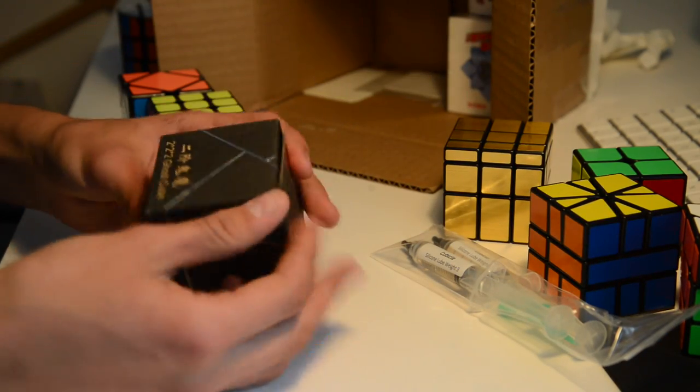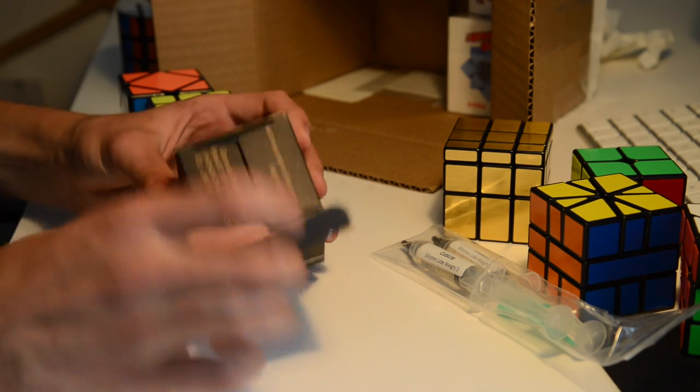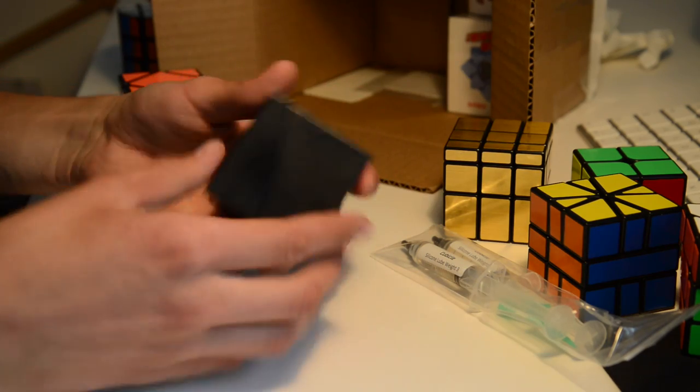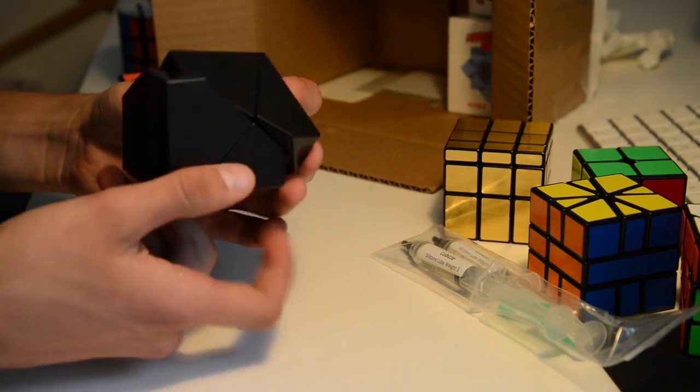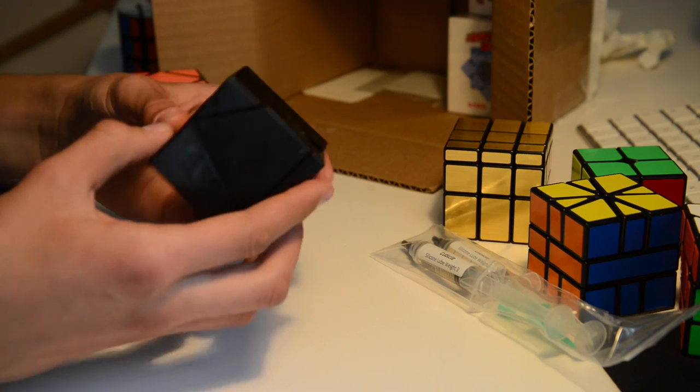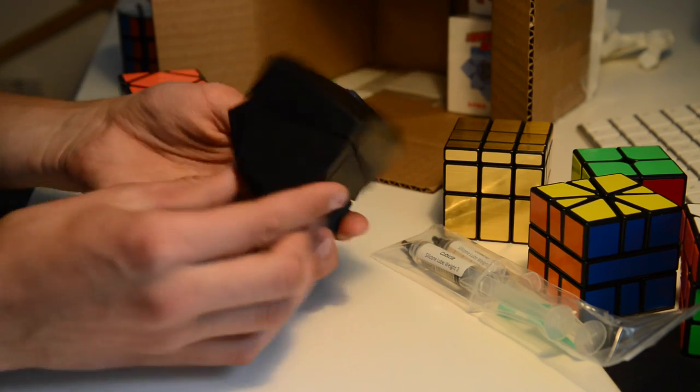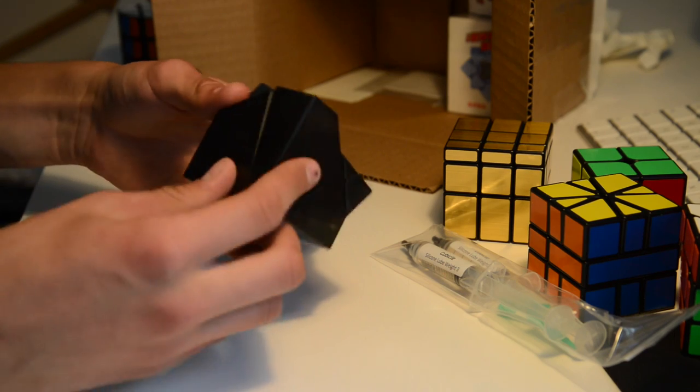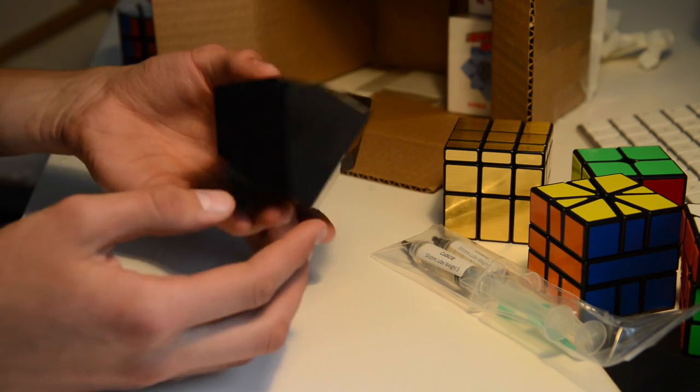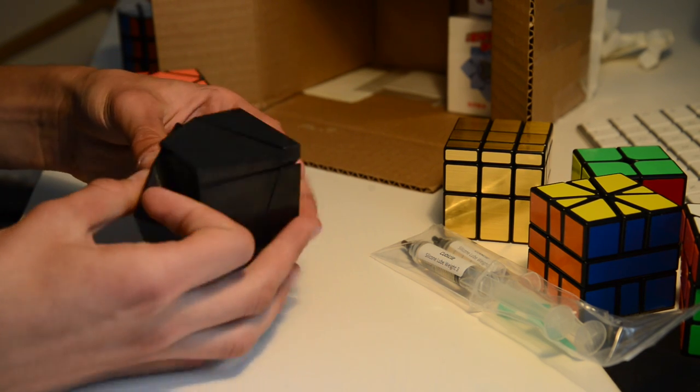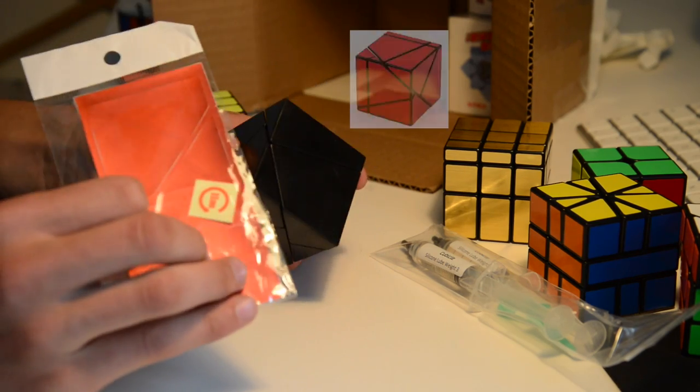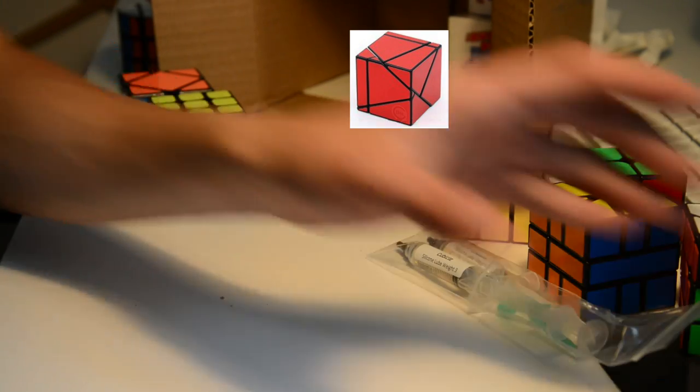So this is the 2x2 ghost cube as you can see, and the packaging is amazing. It feels great. Oh my, I don't want to solve it. Look at this, I moved it just a little bit and it's scrambled. So this is really cool. I really wanted one. It does change shape and shape shifts. I'm going to sticker it later.